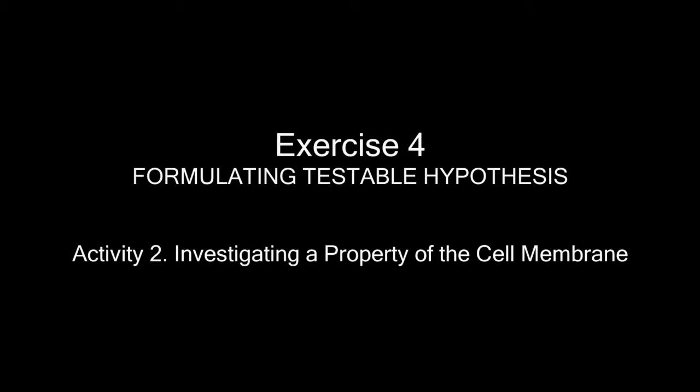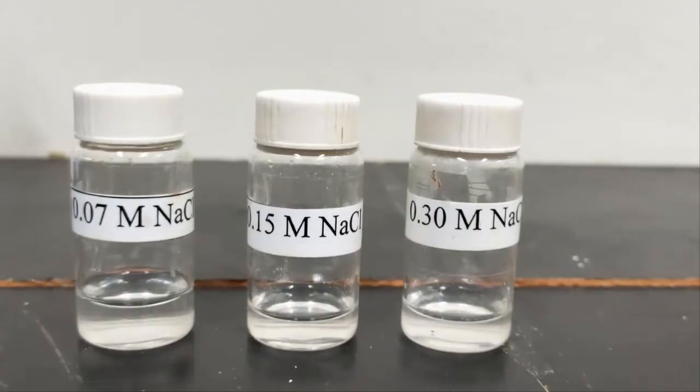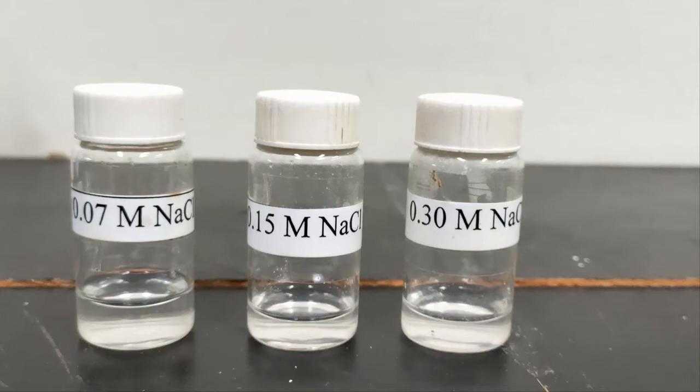The materials for determining responses of RBC to solutions of different concentrations are the following: sodium chloride solutions of 0.07, 0.15, and 0.30 molar concentrations. Two to three drops of mouse blood were placed in each of the vials.